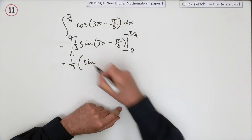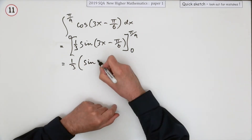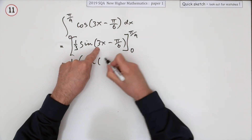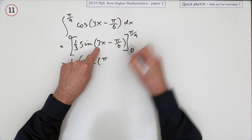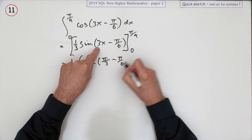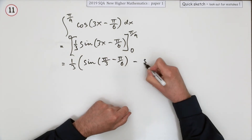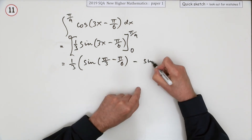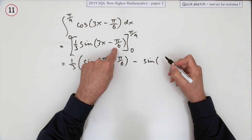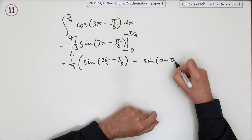So it's a third of sine when x is π/9. That gives 3 times π/9, which I'll simplify to π/3. Minus a third — with the third factored out — of sine of (0 − π/6), which is sine of −π/6.